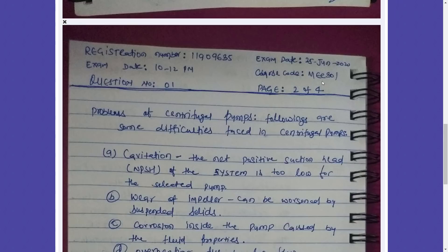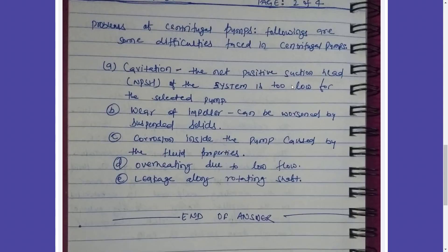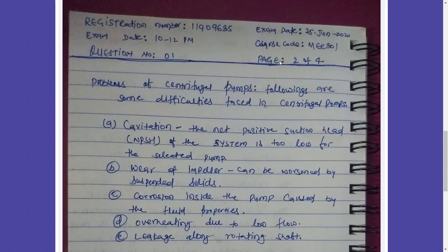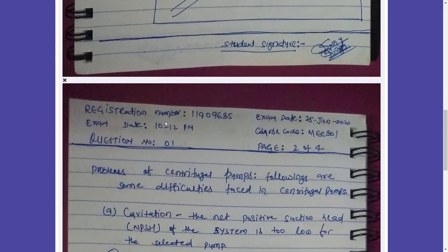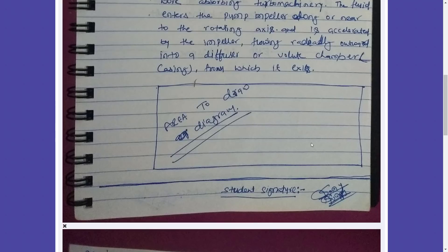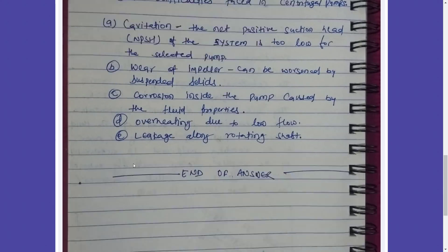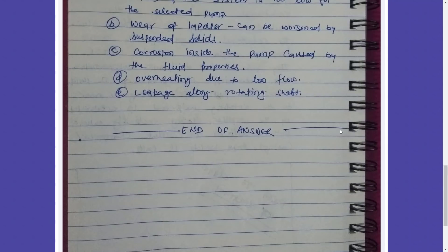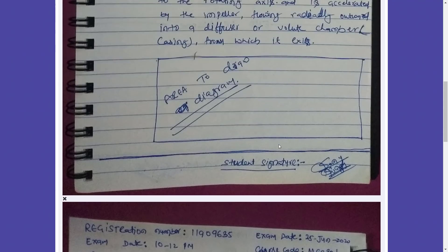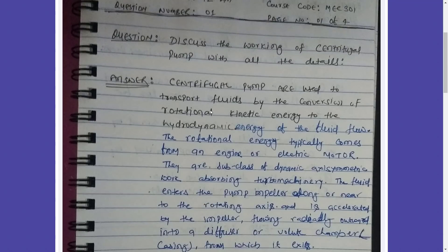On the second page, there is no question rewritten — the answer continues from the first page. Once you finish the answer, include an end tag so the evaluator knows the answer is complete. Note: if your pen runs out of ink mid-answer, the writing color will change — so keep multiple pens ready before starting the exam to avoid such issues.